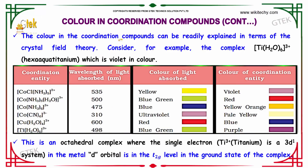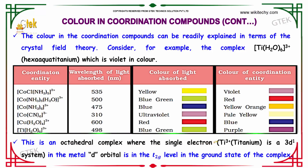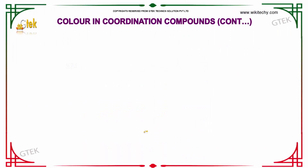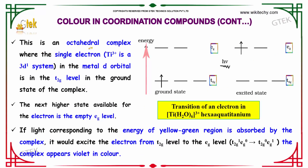The color in coordination compounds can be readily explained in terms of crystal field theory. Consider, for example, the hexaaqua titanium complex, which is violet in color. This is an octahedral complex where the single electron of titanium (3d¹) is in the metal d-orbital at the t2g level in the ground state of the complex.